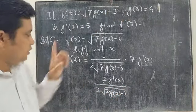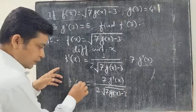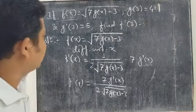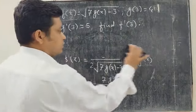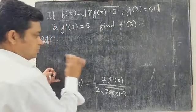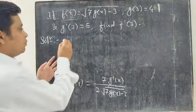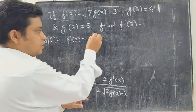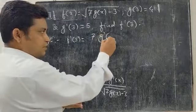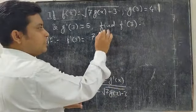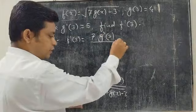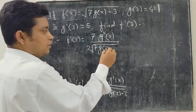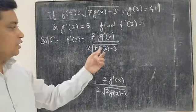Now to find f dash of 3, we replace x with 3. So f dash of 3 is equal to 7 times g dash of 3, divided by 2 under root of 7g(3) minus 3.